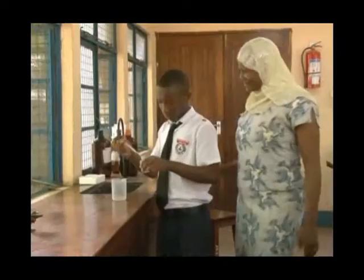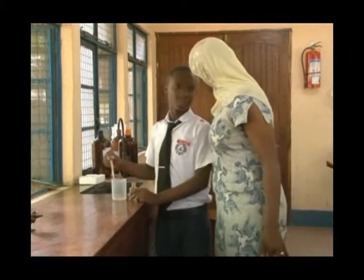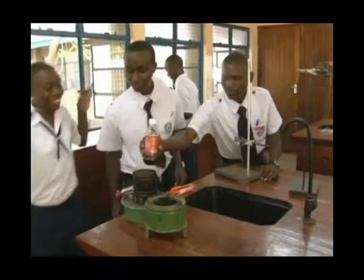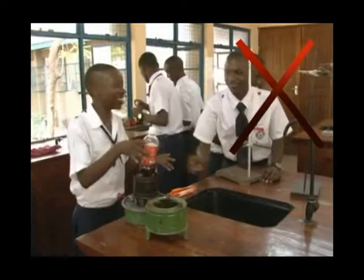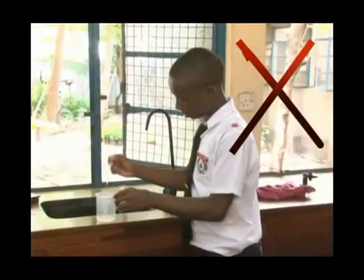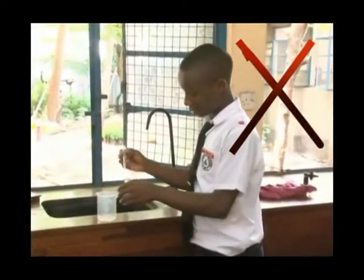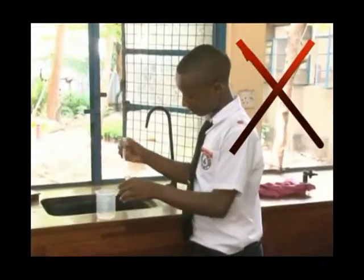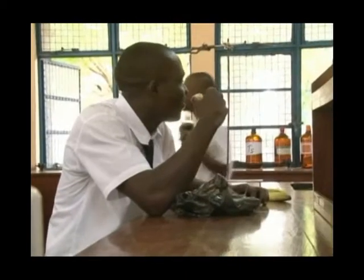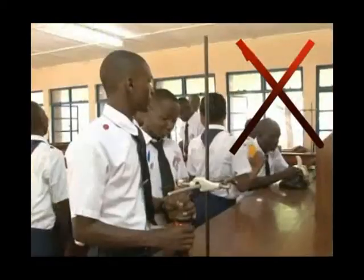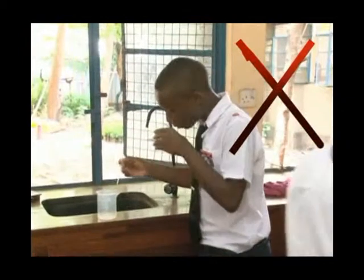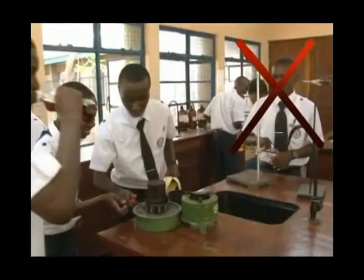Rule number one: learners should never handle any chemicals or laboratory equipment without permission. Rule number two: never eat, drink, or taste anything in the laboratory.